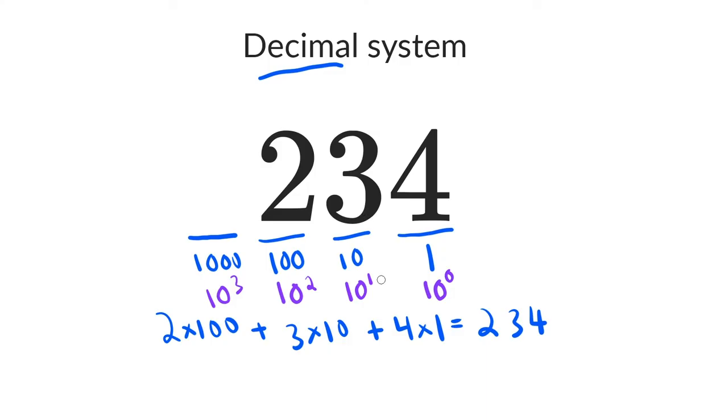To figure out what number we're looking at, we just look at the digit that's in that place, and we multiply it times its place. So a 1 here would be 1 times 1000 plus 234. And that's the decimal system.